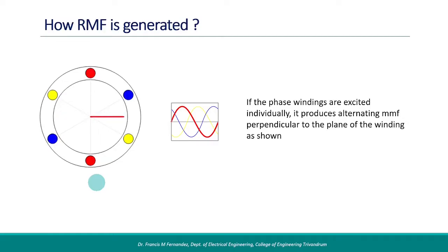If the R phase alone is energized with a sinusoidal current, the flux produced will be perpendicular to the plane of the R coil as seen here. This is simply a pulsating flux, and there is no rotation.